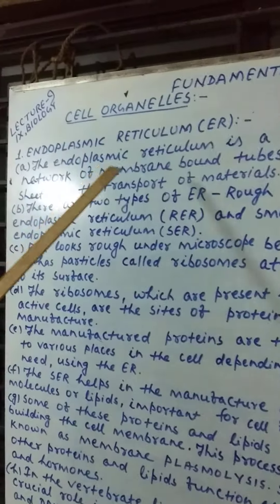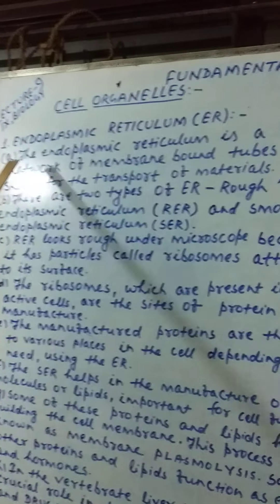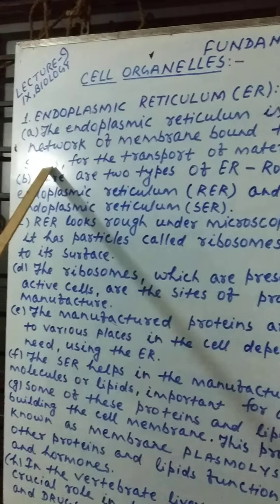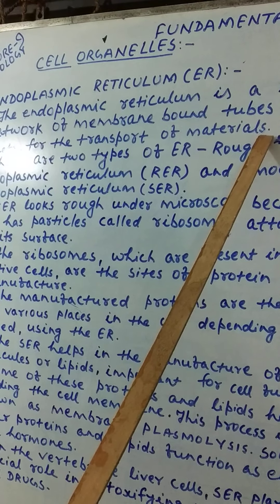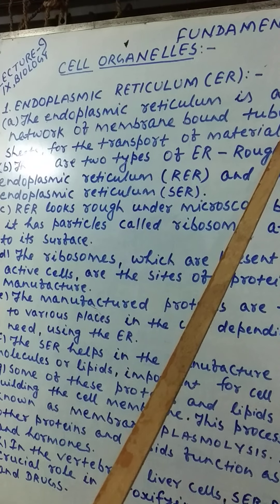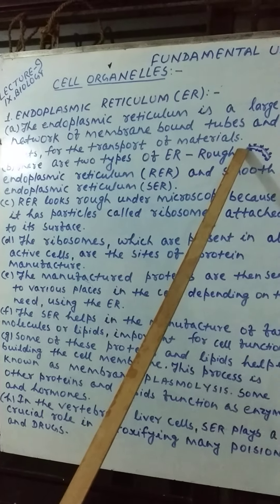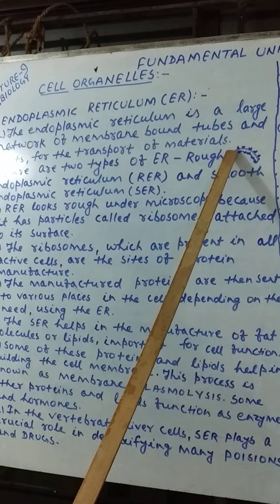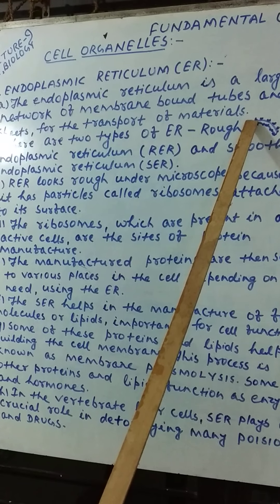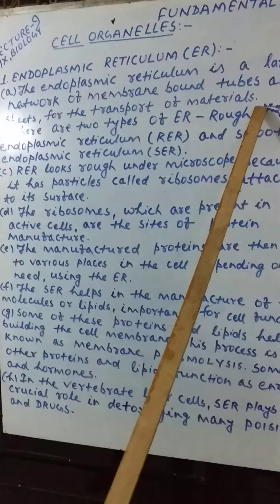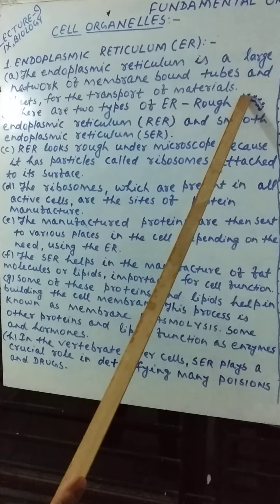The endoplasmic reticulum is a large network of membrane-bound tubes and sheets for the transport of materials. It may be connected to both the outer nuclear membrane as well as the plasma membrane. Endoplasmic reticulum serves as channels for the transport of materials, especially proteins, between various regions of the cytoplasm or between the cytoplasm and the nucleus. It also functions as a cytoplasmic framework, providing a surface for some of the biochemical activities of the cell.